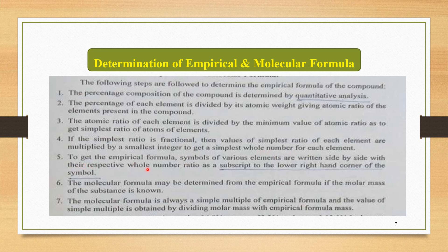Step 5: to get the empirical formula, symbols of various elements are written side by side with their respective whole number ratios as subscripts to the lower right-hand corner of the symbol.